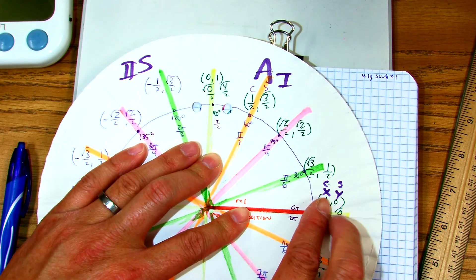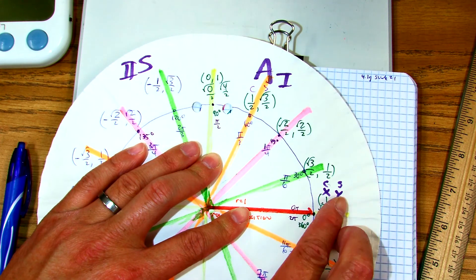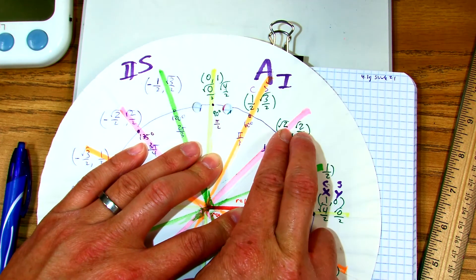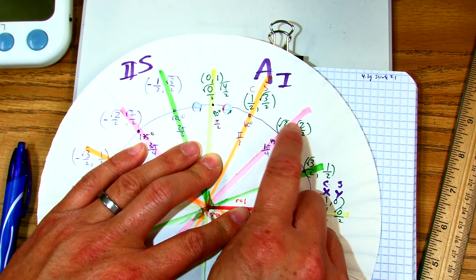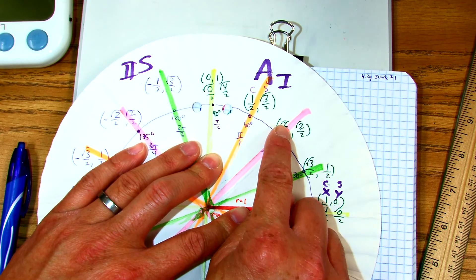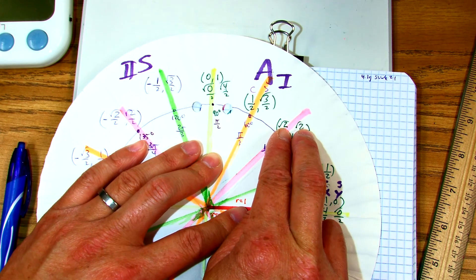Why is that the case? Because you have X, X over R, Y over R. So essentially, tangent is Y over X. So this would be just radical 2 over radical 2, which simplifies to be 1. That's it.